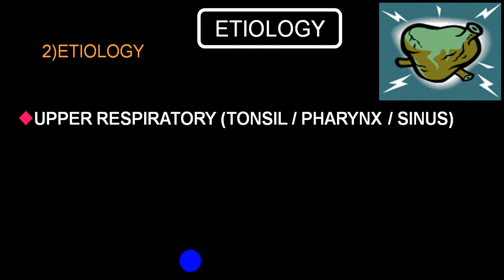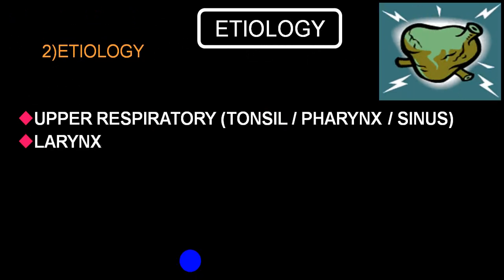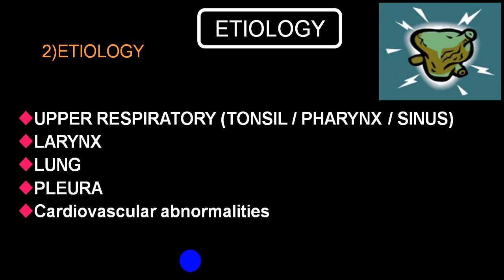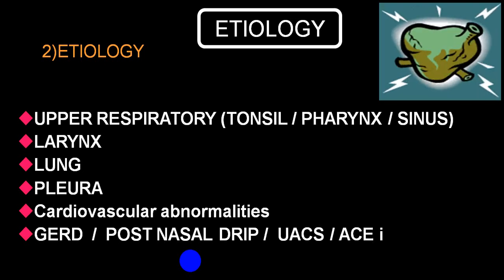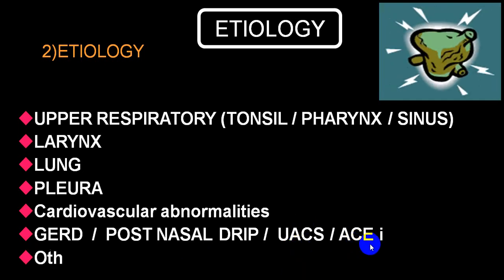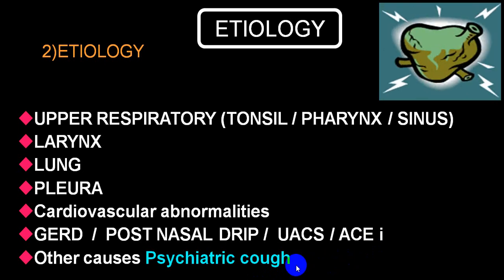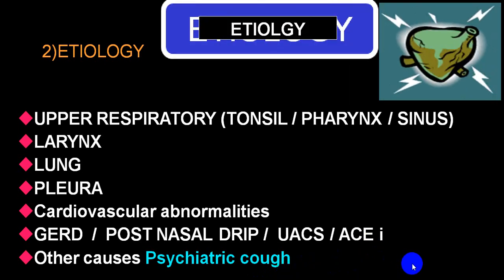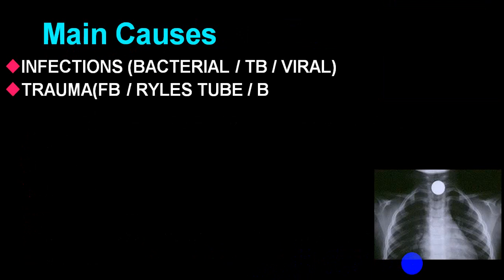Etiology-wise, cough can be divided into upper respiratory tract (tonsil, pharynx, sinuses, larynx), lung pathology or parenchyma, pleura, cardiovascular conditions, GERD, post-nasal discharge, upper airway syndromes, ACE inhibitors (drug-induced), and psychiatric or psychogenic cough. The main cause is infection — among infections, bacterial, tuberculosis, and viral come top of the list. Traumatic conditions include foreign body; even an ETT tube touching the larynx can cause violent cough.